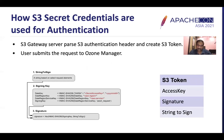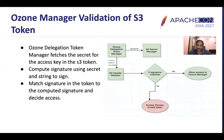How are S3 secret credentials used for authentication? Whenever the S3 gateway server receives a request, it parses the S3 authentication header and creates an S3 token. The S3 token contains an access key, a signature, and the string to sign. Ozone Manager validates this S3 token by looking up the access key ID, fetching the access secret from the S3 secret table, computing the signature using the string to sign and the S3 secret, and comparing it with the token signature. If they match, it is a valid S3 token and access is allowed. If there is any mismatch, access is denied and an 'invalid token' error is returned.